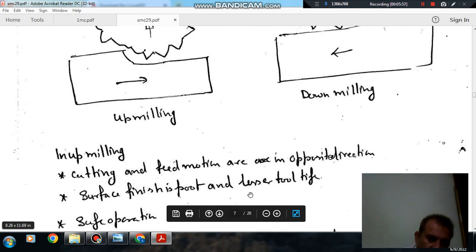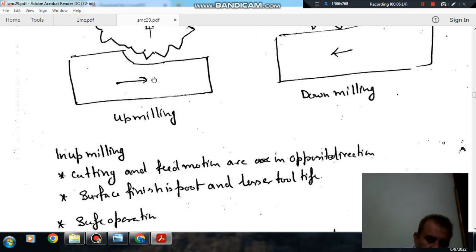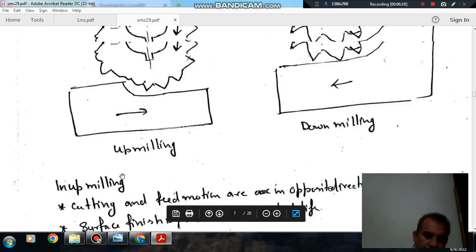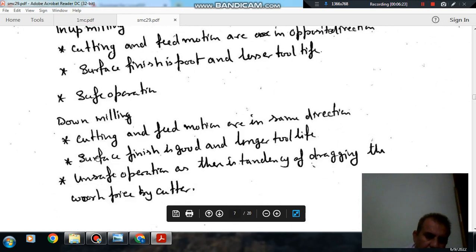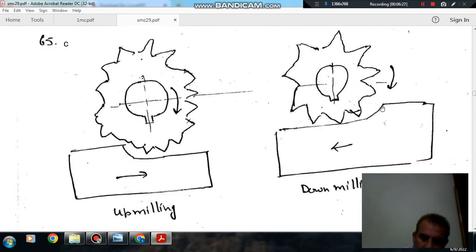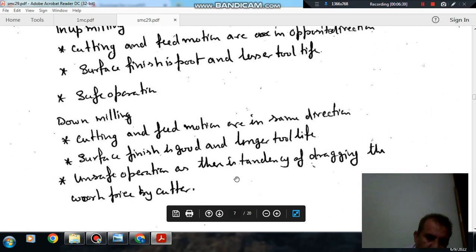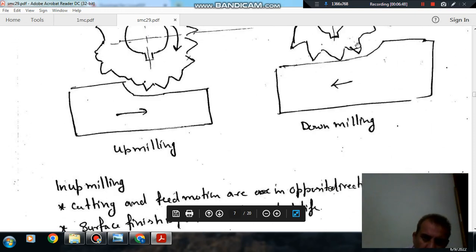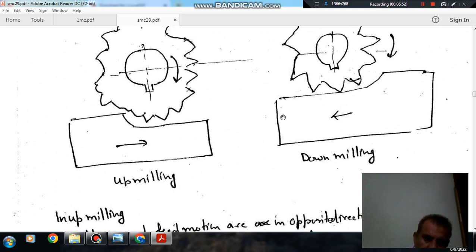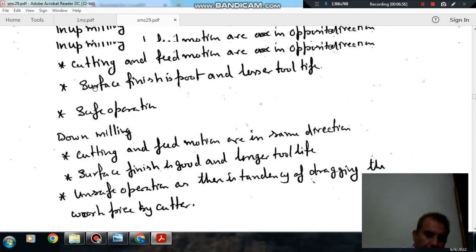And surface finish is poor and lesser tool life because it is going to this part first on finishing part and then it is cutting, so it gives poor surface finish. And safe operation because it will not drag the work piece. Down milling can drag the work piece because of the same direction of rotation of cutter and the feed. So answer is C.